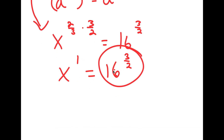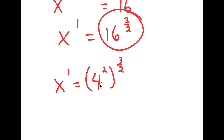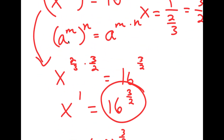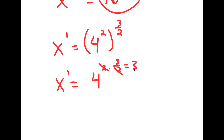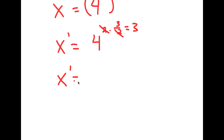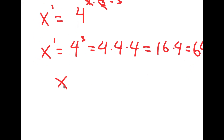Now we have the value of x, but I want to put 16 to the power of 3 over 2 in a whole number form. So I'm going to rewrite 16 to the power of 3 over 2 as 4 squared to the power of 3 over 2 — I simply rewrote 16 as 4 squared. Using the property again, a to the power of m to the power of n equals a to the power of m times n, this gives 4 to the power of 2 times 3 over 2. The 2s cancel, so this equals 4 to the power of 3, which is 4 times 4 times 4. 4 times 4 is 16, so 16 times 4 equals 64, meaning x is equal to 64.